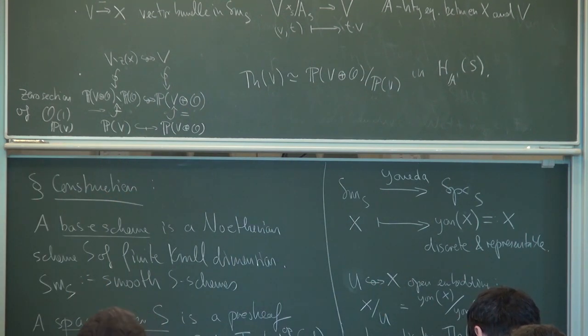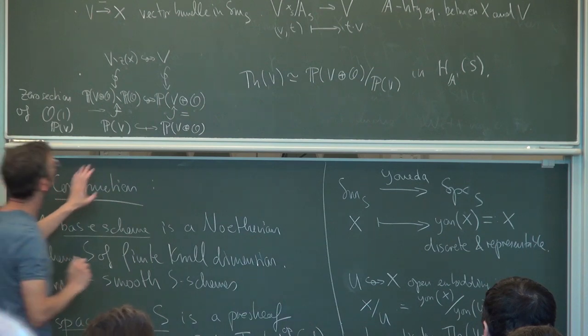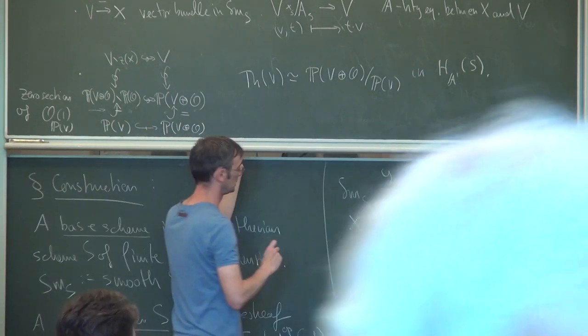So the Thom space here is equivalent to the quotient here, is equivalent to the quotient here. Okay, let's do it.